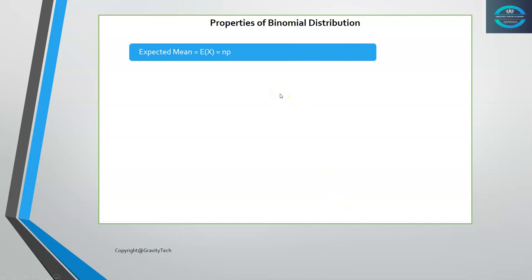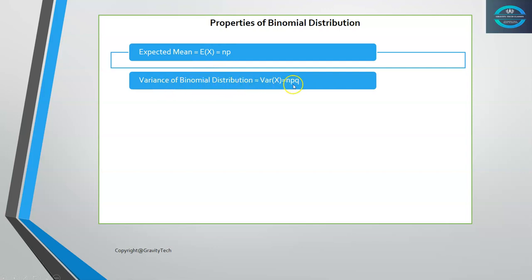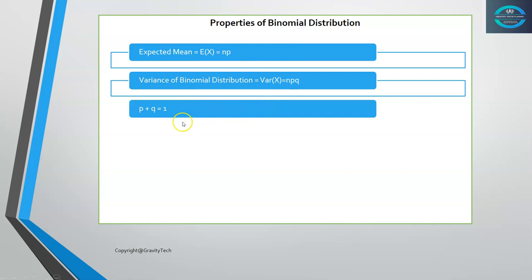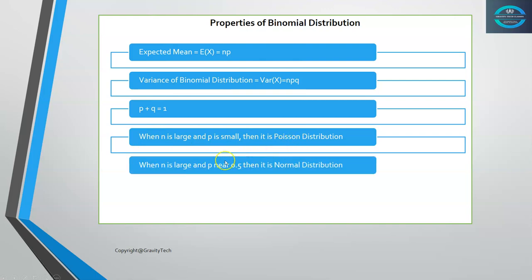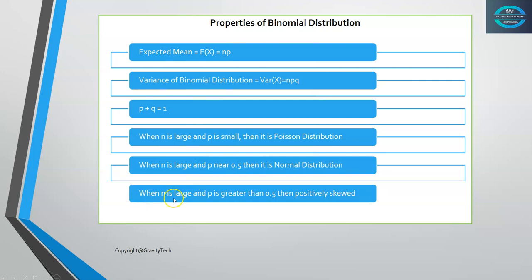Now, the properties of binomial distribution. The expected mean is E(X) equals N times P, where N is the number of trials and P is the probability of success. The variance of a binomial distribution is Var(X) equals N·P·Q. Also, P plus Q equals 1, where Q is the failure probability and P is the success probability. When N is large and P is small, it becomes a Poisson distribution. When N is large and P is near 0.5, it becomes a normal distribution.